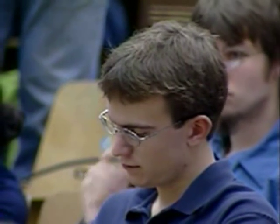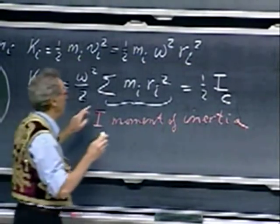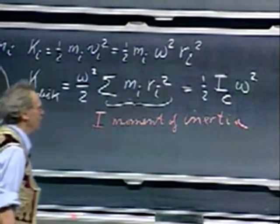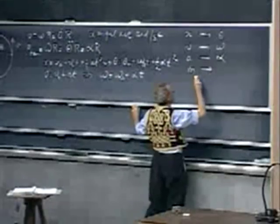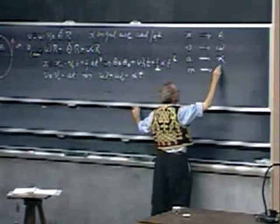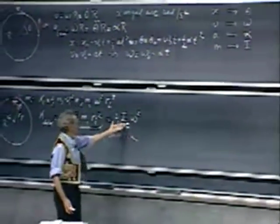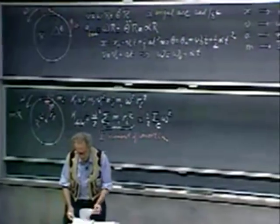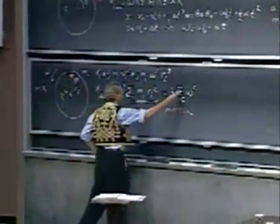So the rotational kinetic energy can be written as ½I_c·omega²—I put the subscript c because the moment of inertia depends on which axis of rotation I choose. When you see that equation, it looks quite similar to ½mv². Adding to our analogy list: mass in linear motion corresponds to moment of inertia in rotational motion.